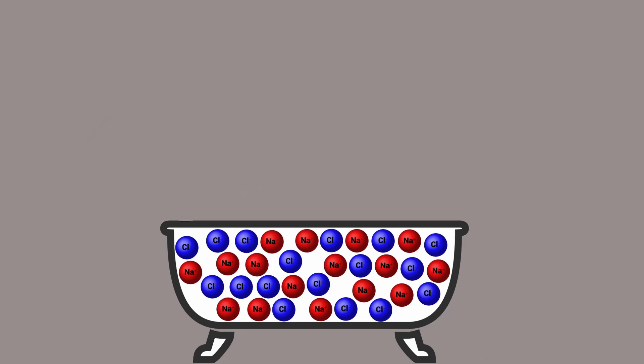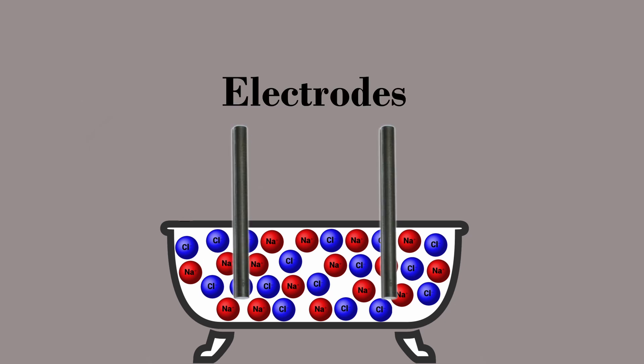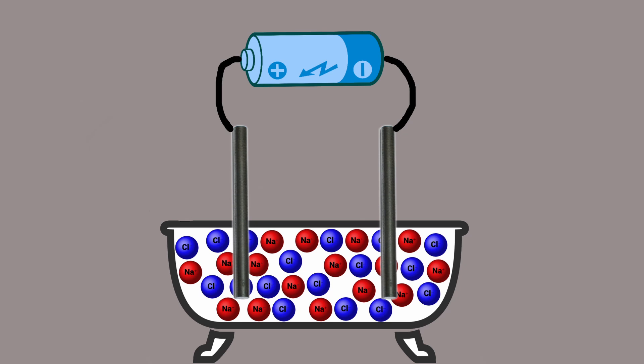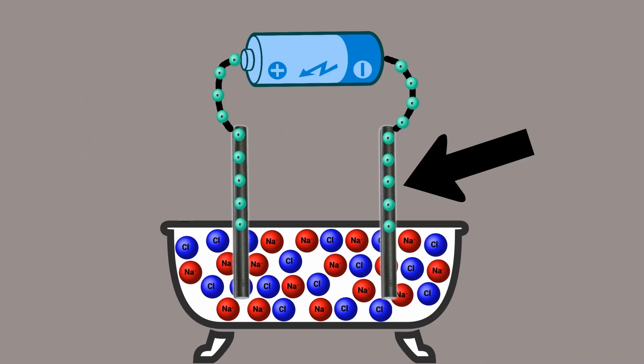We have our tub of lava salt. What we do next is stick two metal rods, called electrodes, into our lava tub. These rods are attached to a battery, and when the battery is turned on, the rods go to work. Electrons in the battery move out of the negative side and transfer to this rod, which is called the cathode.